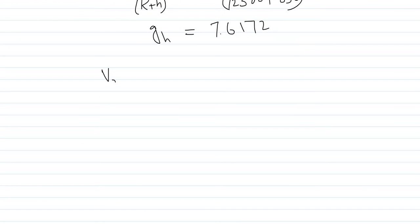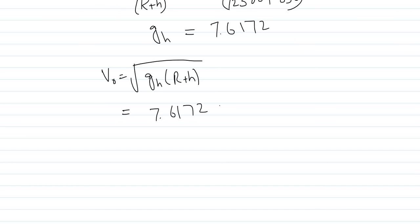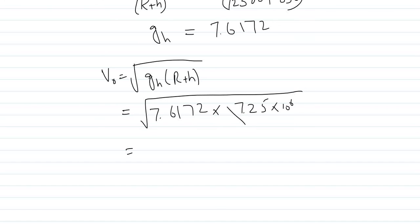The formula for orbital velocity is v₀ = √(gH × (R + H)). Putting in the values: gH = 7.6172 and R + H = 7.25 × 10⁶. Taking the square root after multiplying, we get the orbital velocity v₀ = 7431 meters per second. I hope this is clear. If you have any problem with these numericals, you can ask me.